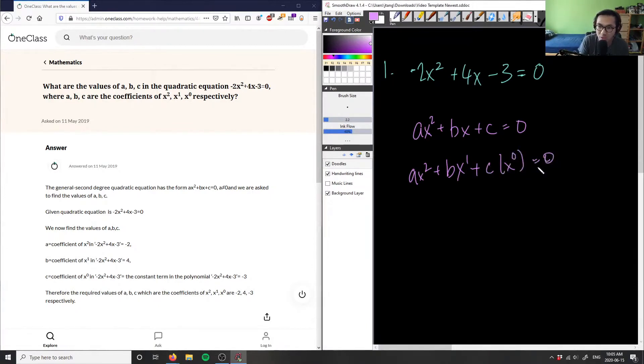So, it doesn't change our c value here. It's still constant. And again, this x to the power of 0 equals 1, so this does not affect the constant term here. Now all we have to do is look at our quadratic equation that's given to us and see what terms fit in this general form.